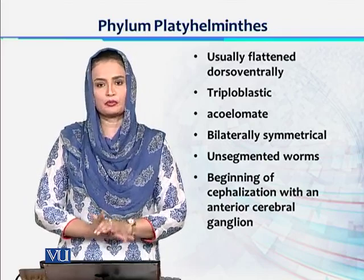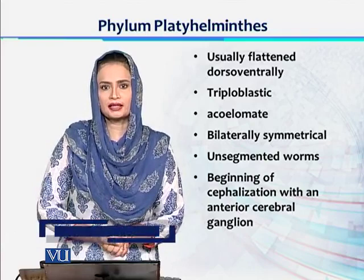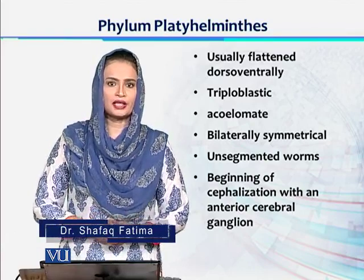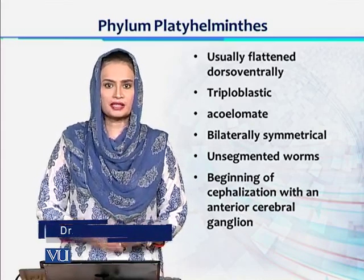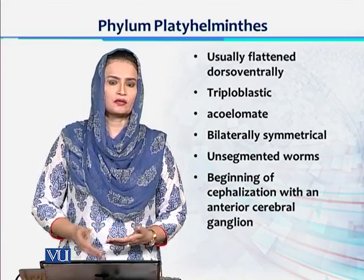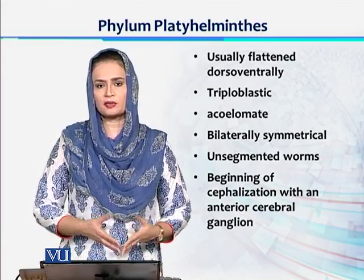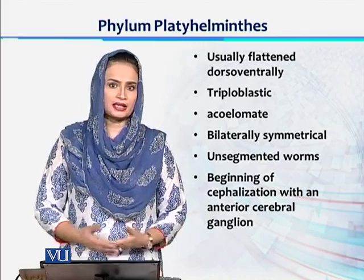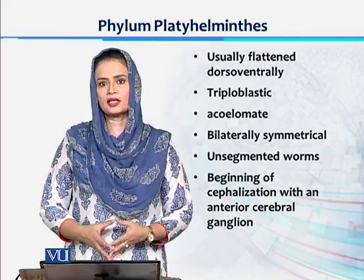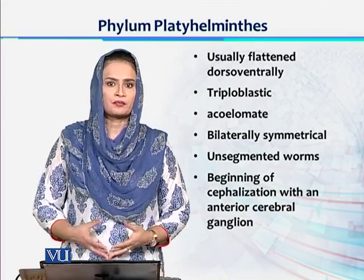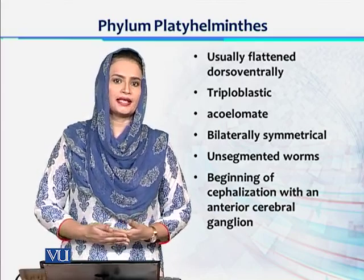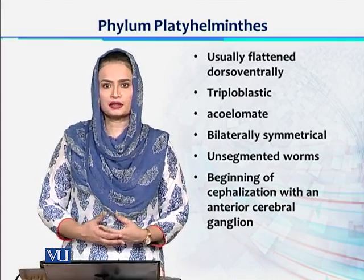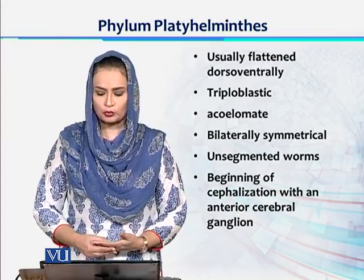They have dorsal-ventrally compressed body forms. There are three different body layers: the epidermis, the gastrodermis, and the mesenchyme. In previous groups, the mesenchyme was non-living, but here it contains living cells. These organisms don't have any body cavity because the whole body is filled with tissues and cells, so they are called acoelomates — they don't have any coelom or body cavity.